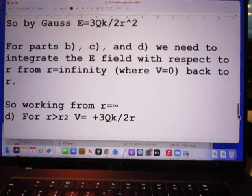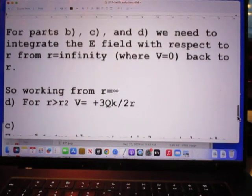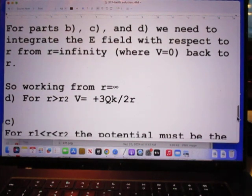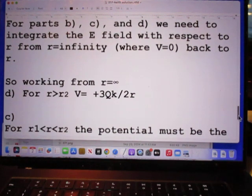For part B, C and D, we need to integrate the E field with respect to R, from R equals infinity, where V is zero, back to R. Remember, at infinity, the electric potential is zero.